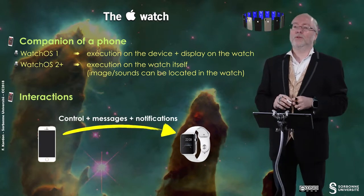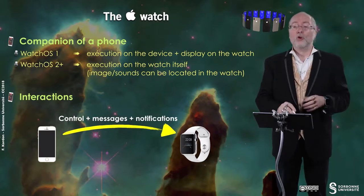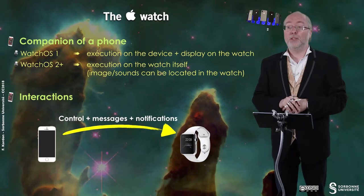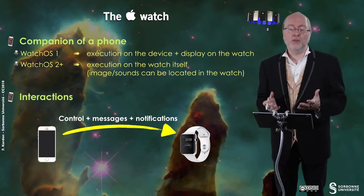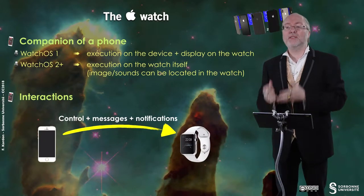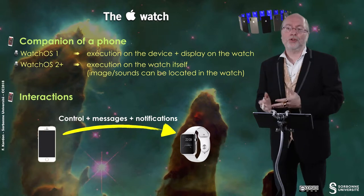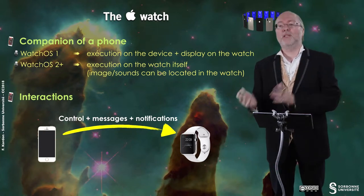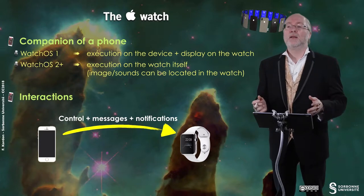In that direction, you can control the watch directly, you can send messages, and the program can also issue notifications that are propagated to the device. Typically, if your application supports notifications, and if your device is locked, and if you have an extension that allows such notifications, the notifications are automatically forwarded — typically for SMS, so you can read your SMS directly on your watch. You can do that with any application handling notifications.